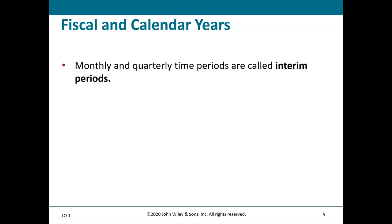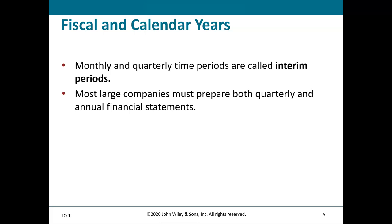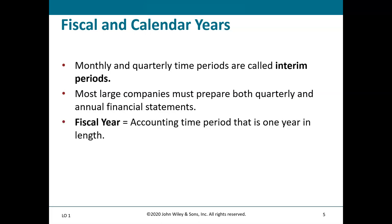Most large companies must prepare both quarterly and annual financial statements. Any company listed on the US stock exchange has to do quarterly reporting and produce financial statements each quarter and annually. The fiscal year is an accounting time period one year in length. A calendar year is January 1 to December 31. Most of what we cover in class follows the calendar, so January 1 through January 31 is a month, February 1 through February 28, and so on.